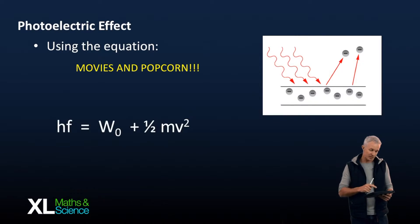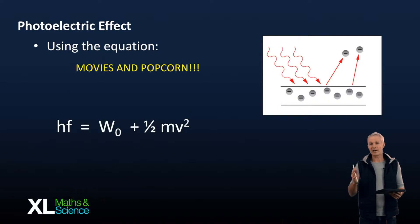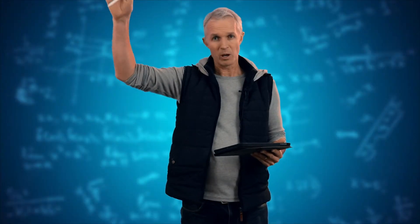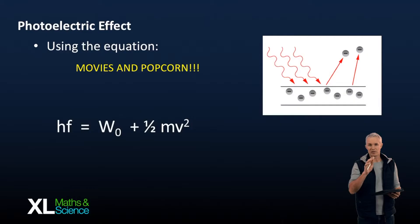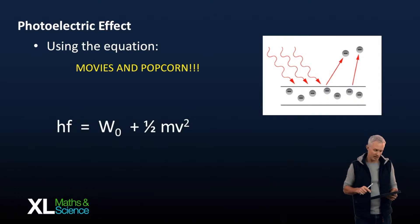Now each one of those things represents one of the aspects of the photoelectric effect. So we've got photons coming in, that's your hf, the W₀ represents the metal, and the half mv squared, the photoelectrons that get booted out.